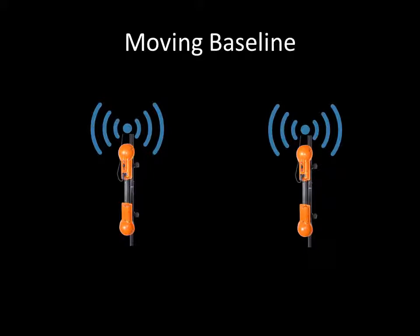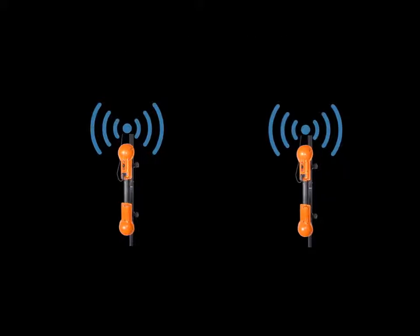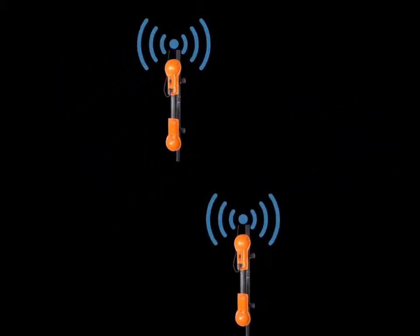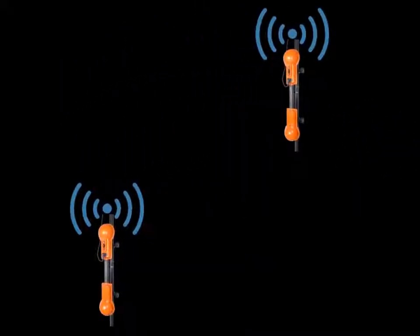Moving baseline mode requires no measurements or entries. In this case, the baseline between the spars is automatically calculated. This method of spar separation allows the most freedom, since you may move the spars independently on any kind of terrain with no offset measurements.